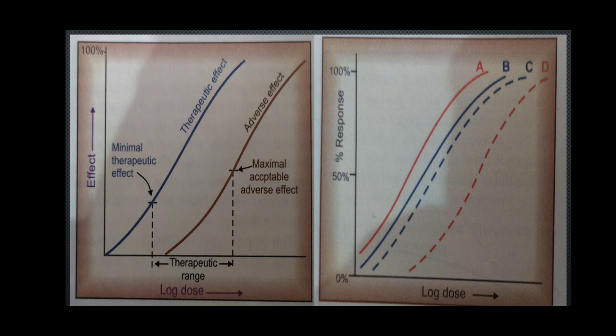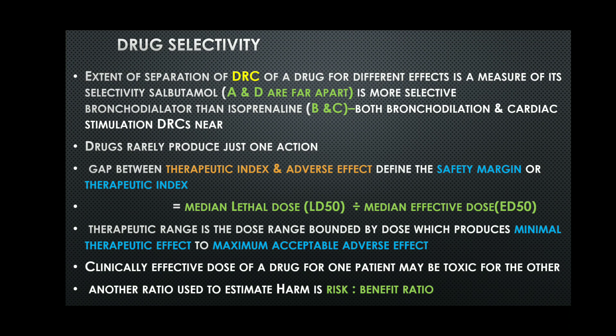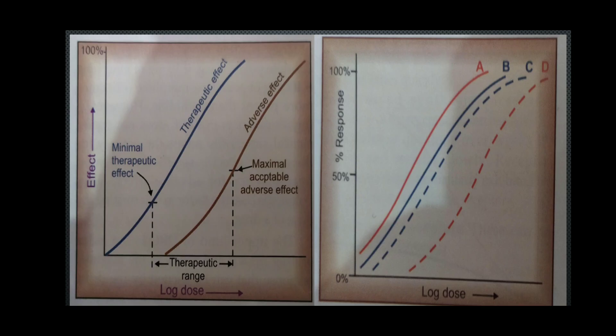In the graph, curves A and D are for one drug and curves B and C are for another drug. Curves A and D represent salbutamol, and curves B and C represent isoprenaline. Salbutamol is a more selective bronchodilator than isoprenaline, as shown by curves A and D being further apart than B and C.